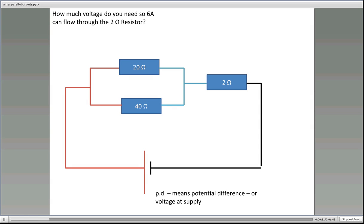So how much voltage at the start or pressure at the start will get 6 amps flowing through the 2 ohm resistor? So I hope you've done your study with series circuits and parallel circuits and we'll now just break it down into those.